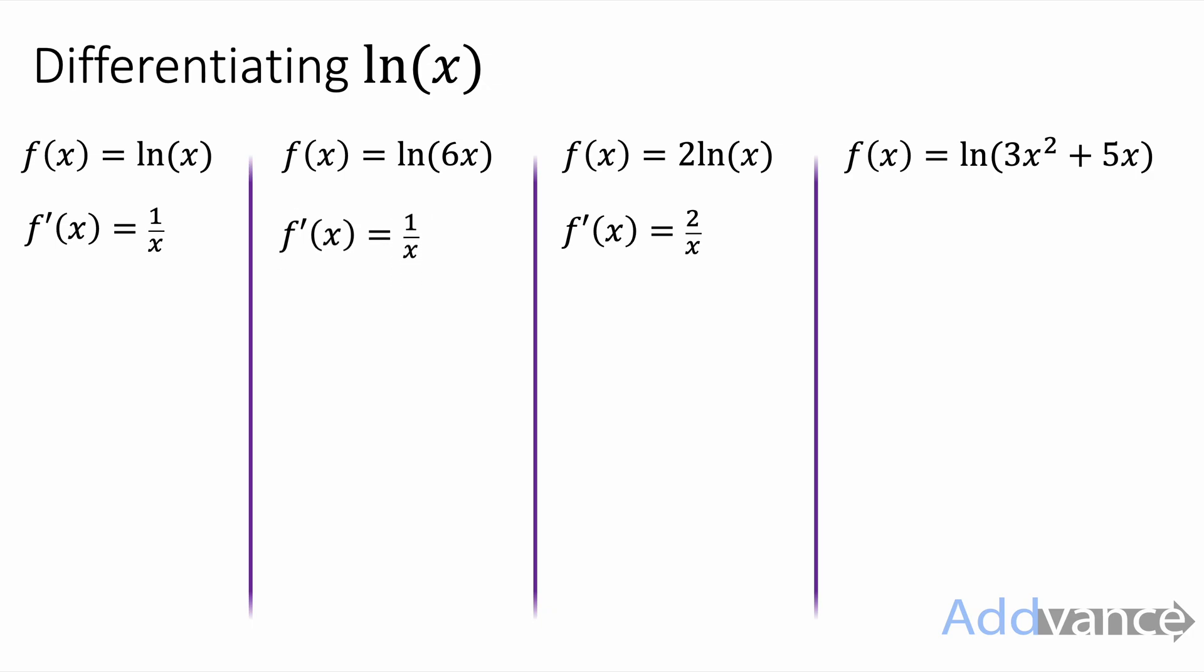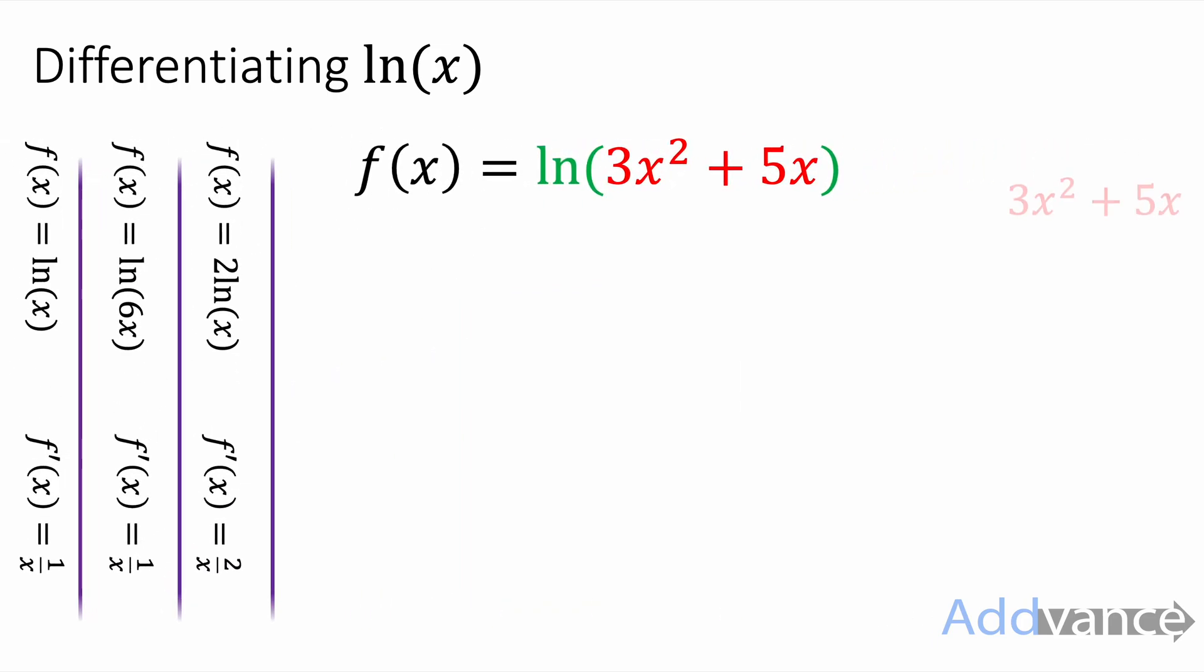Now we've got a more complicated one. We're going to use the chain rule on ln of 3x squared plus 5x. We differentiate the inside of the bracket and we get 6x plus 5. And then we differentiate the ln. ln of 3x squared plus 5x. Well the ln part will differentiate to 1 over. And then we multiply it by 6x plus 5.